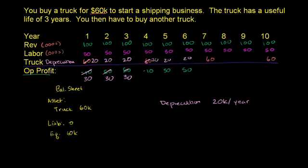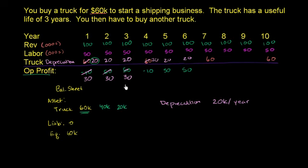Now what does depreciation do to our balance sheet? At the beginning of year one we had a truck worth $60,000. If you forward to the end of year one, or the beginning of year two, because we're depreciating the value of the truck on our balance sheet — we took a $20,000 depreciation expense — the value of the truck will go from $60,000 to $40,000. At the end of year two it goes down to $20,000. And at the end of year three it goes down to zero, then we go buy another truck and go back to $60,000. The cool thing about this is it makes the expense very consistent, and actually more consistent with what our business is actually doing.